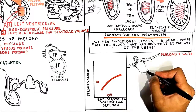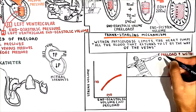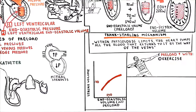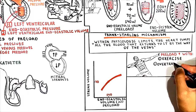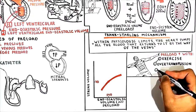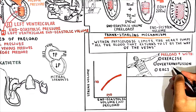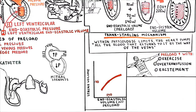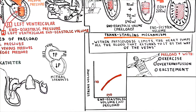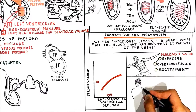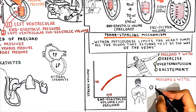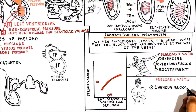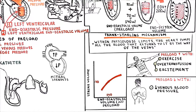Preload increases with exercise, increased blood volume such as in over-transfusion, and excitement when sympathetic activity is increased. Preload decreases with decreased venous blood pressure, most commonly resulting from reduced blood volume in cases of hemorrhage, and venodilation.